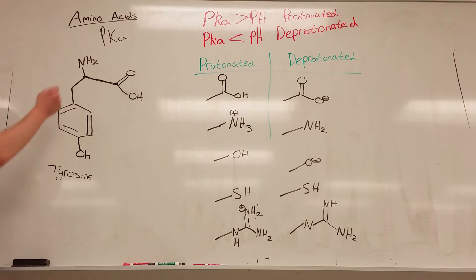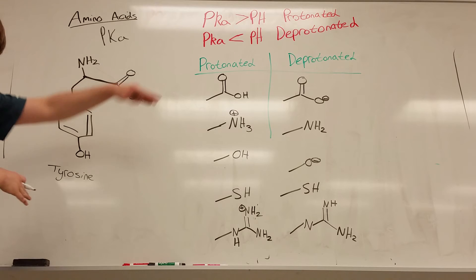In this example, I have given you an R group that is a carbon and then a benzene ring with an OH. This is what makes up the amino acid tyrosine. But this could just be a carbon, or this could just be a hydrogen, and those are two other amino acids you could work with.